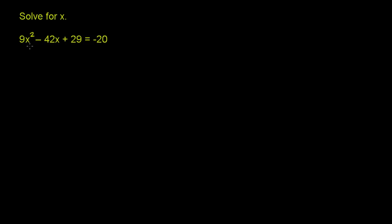We're asked to solve for x. We have 9x² - 42x + 29 = -20.